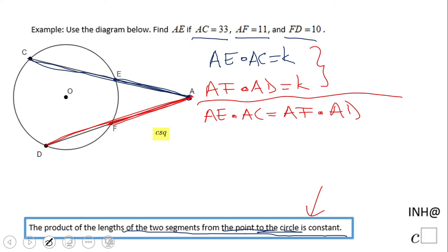AE is the one we need to find out. Let me call it X. AC is 33. AF is 11. And we have AD, which is this whole segment. If you take a look, AD using the segment addition postulate is AF plus FD. So that will be 11 plus 10.